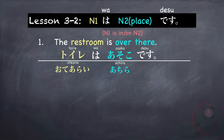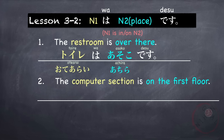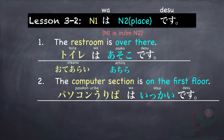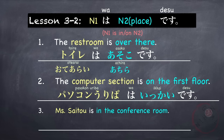The polite way of saying toire is otearai, and the polite way of saying asoko is achira. So if you want to be more polite, you say: Otearai wa achira desu. Next example: 'The computer section is on the first floor.' Pasokon uriba wa ikkai desu. Pasokon is computer, uriba is the department or section, and ikkai means first floor.